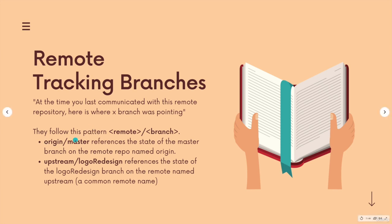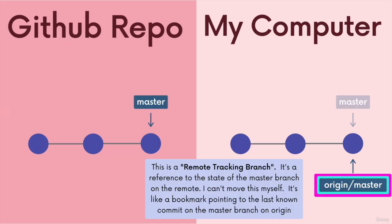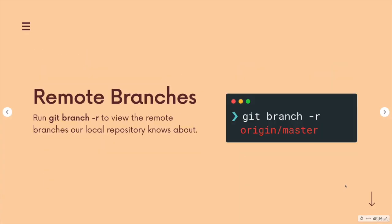As we talked about, origin is a very common remote name, so we've got origin/master. But that might as well be origin/eggplant, or upstream — that's another common remote name — slash logo-design as a branch. It could be any remote name slash a branch. Just as the example: if we clone a repo, by default the remote name will be set to origin, and whatever the default branch name — in this case master — will give us origin/master. We can actually view these remote tracking branches if we use git branch with the -r flag to see that branch reference.